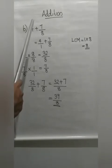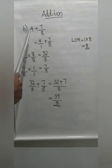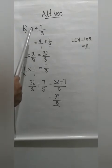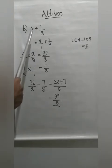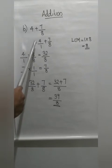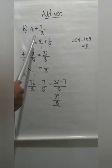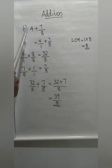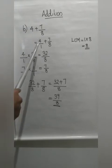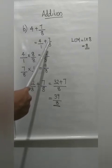Next example: 4 plus 7 by 8. Here the first term is 4 — it is like a whole number. But we can convert it into a fraction. We don't have a denominator part, so we make the denominator 1. Is there any change in value? No — 4 by 1 means 4 itself. So if you get a whole number, just write the denominator as 1. So we have 4 by 1 plus 7 by 8, and now both numbers are fractions.